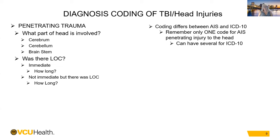Diagnosis coding of TBI and head injuries. For penetrating trauma, the first thing to consider is what part of the head was involved — the cerebrum, cerebellum, brainstem — or more than one area. Read the AIS coding boxes about where to code if more than one area is involved. Was there a loss of consciousness? Was it immediate — right on scene — or did it occur later, and for how long?